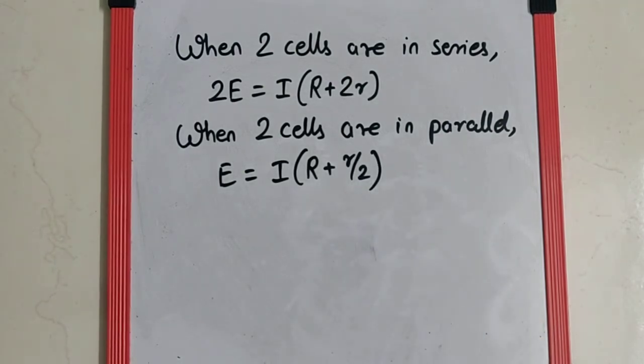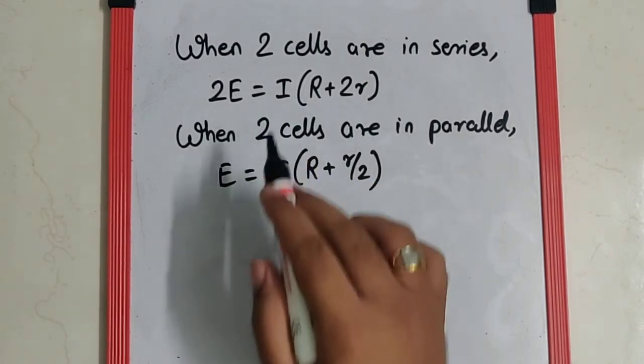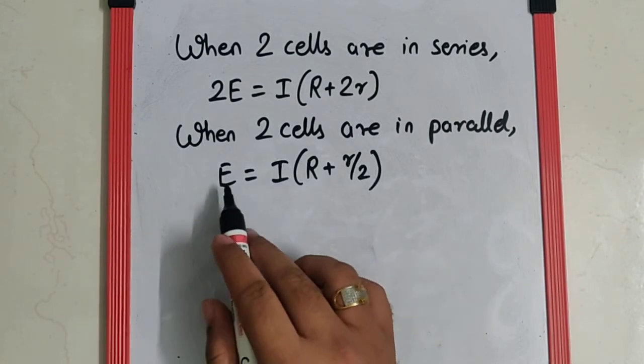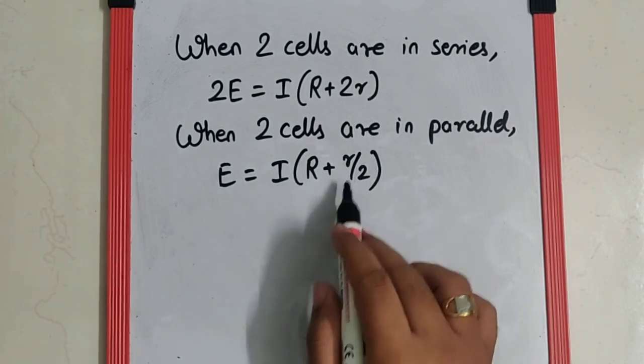Now here the external resistance given is 2 ohms and internal resistance is asked. They said the same current passes through both. So what we can do is substitute this E value over here in this equation.